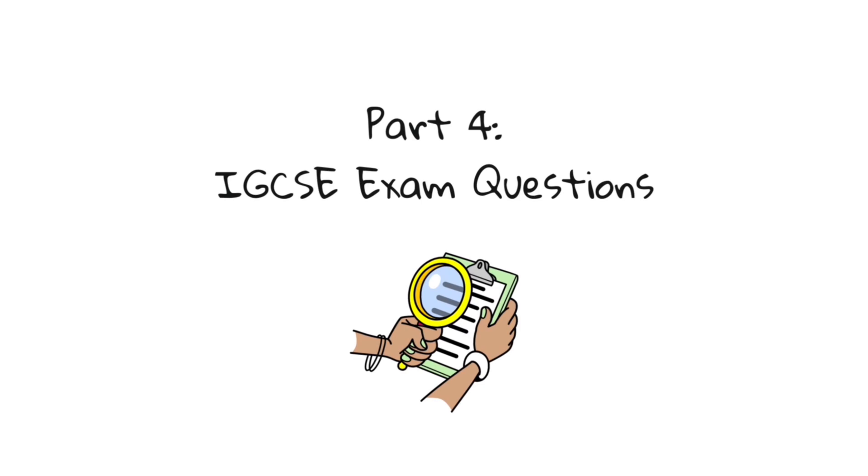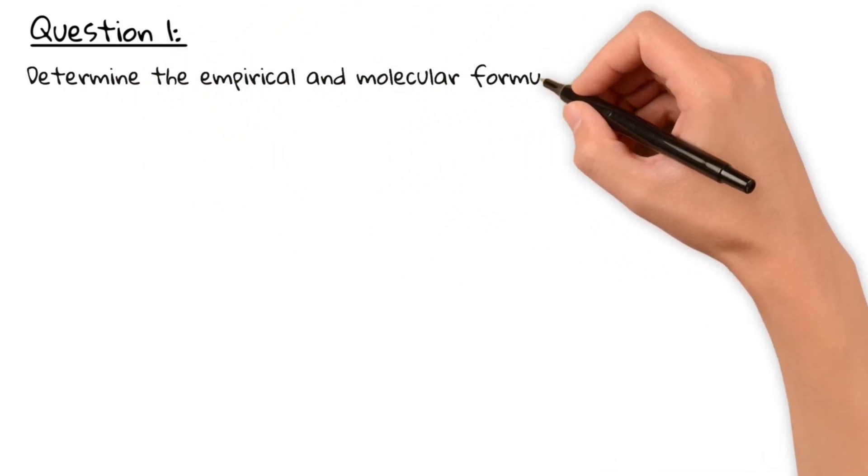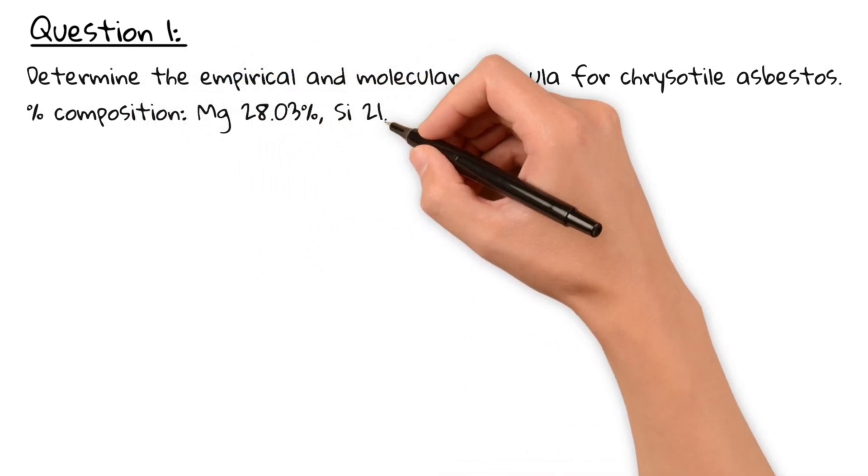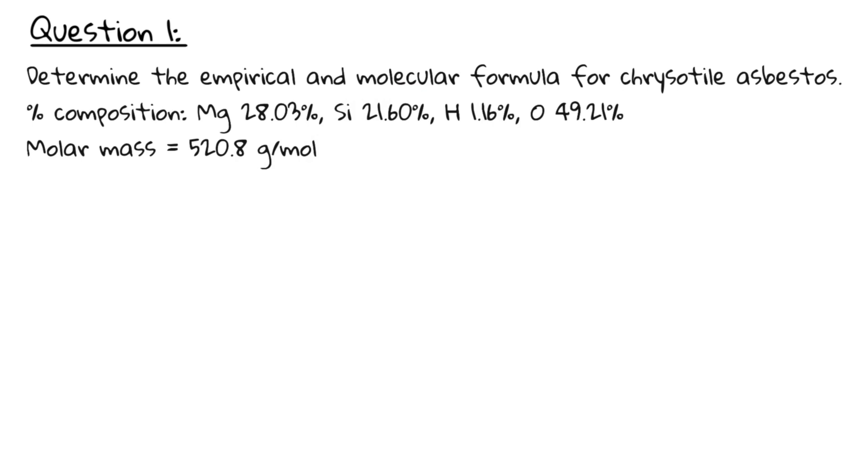Now, let's do two IGCSE-style example questions. Question one. Determine the empirical and molecular formula for chrysotile asbestos with the percentage composition of magnesium 28.03%, silicon 21.6%, hydrogen 1.16%, oxygen 49.21%. The molar mass is 520.8 gram per mole. Pause the video and give it a try.